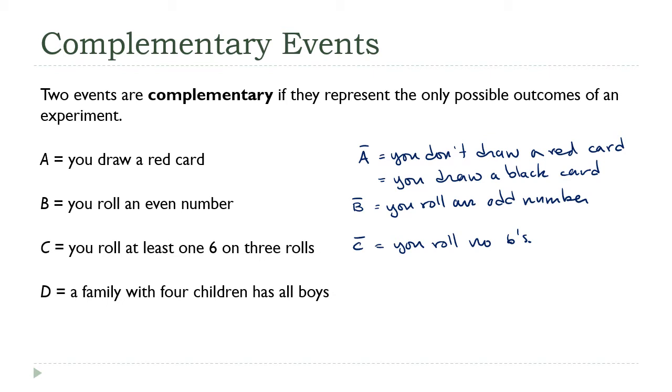D, a family with four children has all boys. What would be the complement? You don't want to say has no boys. You got to be careful about this. Three boys and one girl would be not four boys. When I want to do the complement of an all, I'm going to say at least. This is has at least one girl.